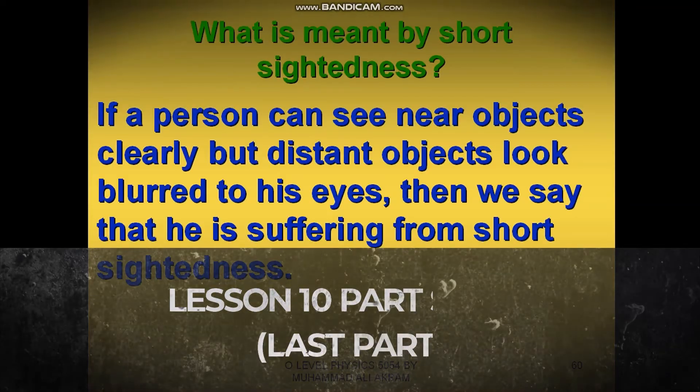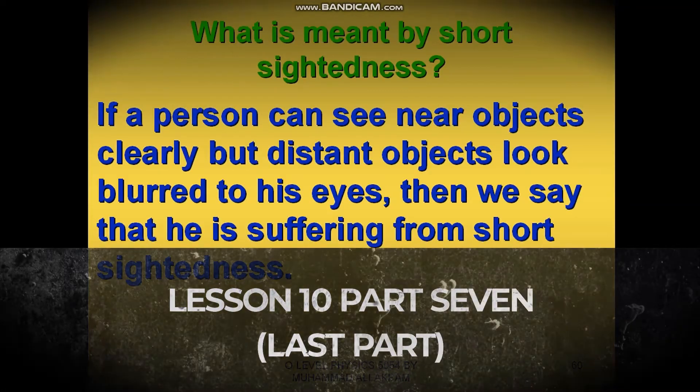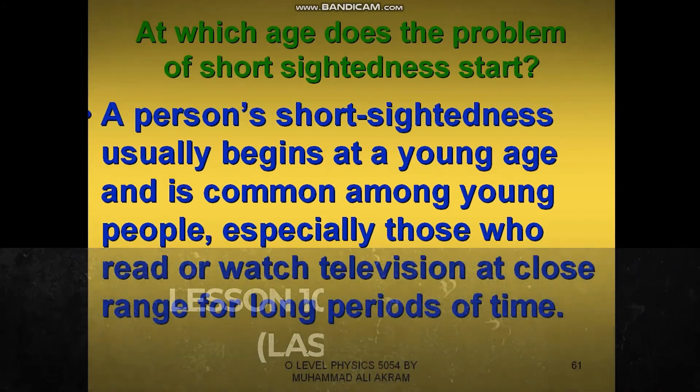Let's revise short sightedness. If a person can see near objects clearly but distant objects look blurred, we say he is suffering from short sightedness.